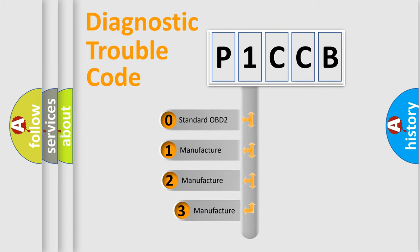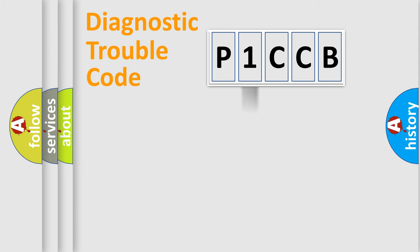If the second character is expressed as zero, it is a standardized error. In the case of numbers 1, 2, or 3, it is a manufacturer-specific expression of the car-specific error.